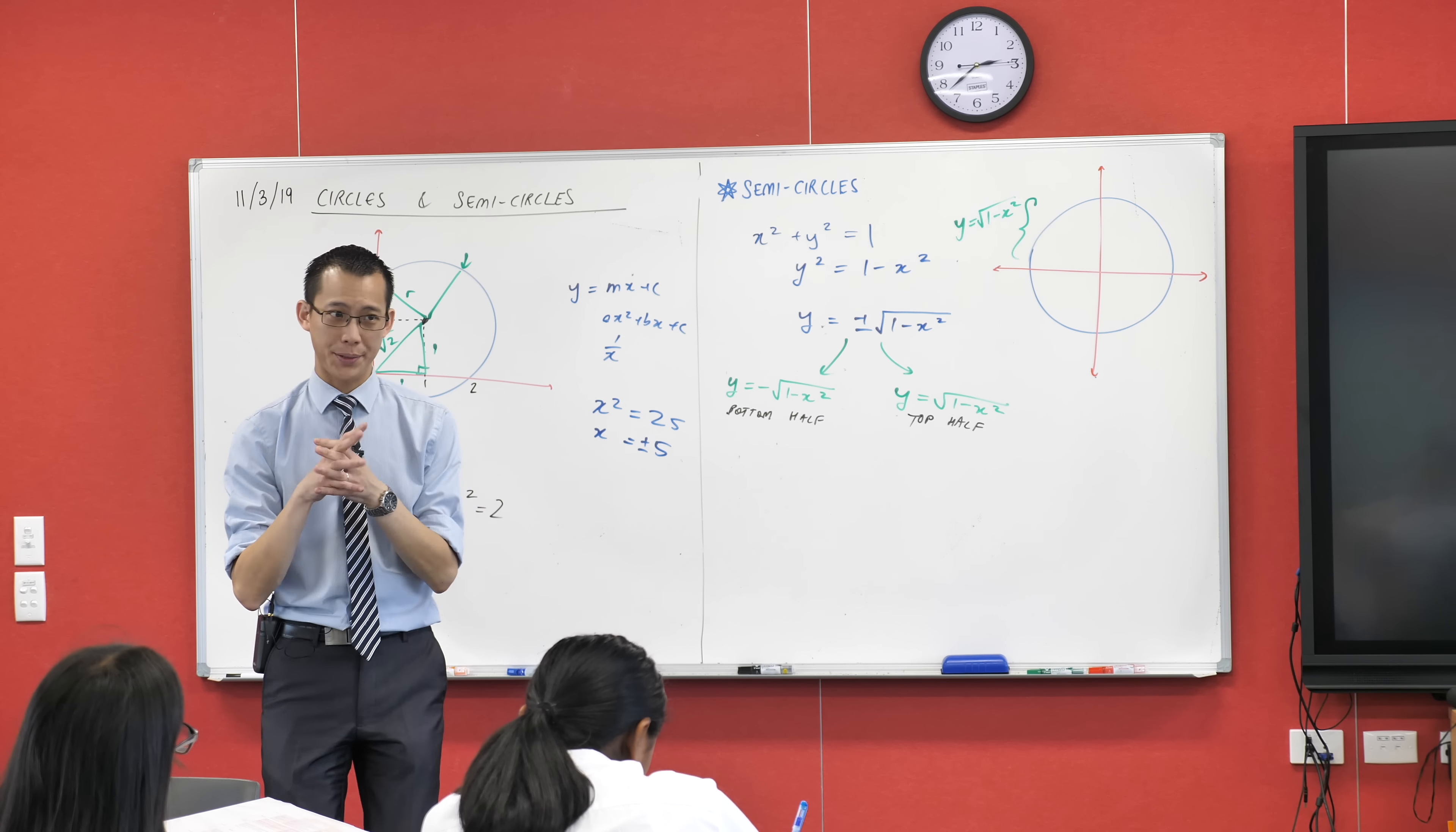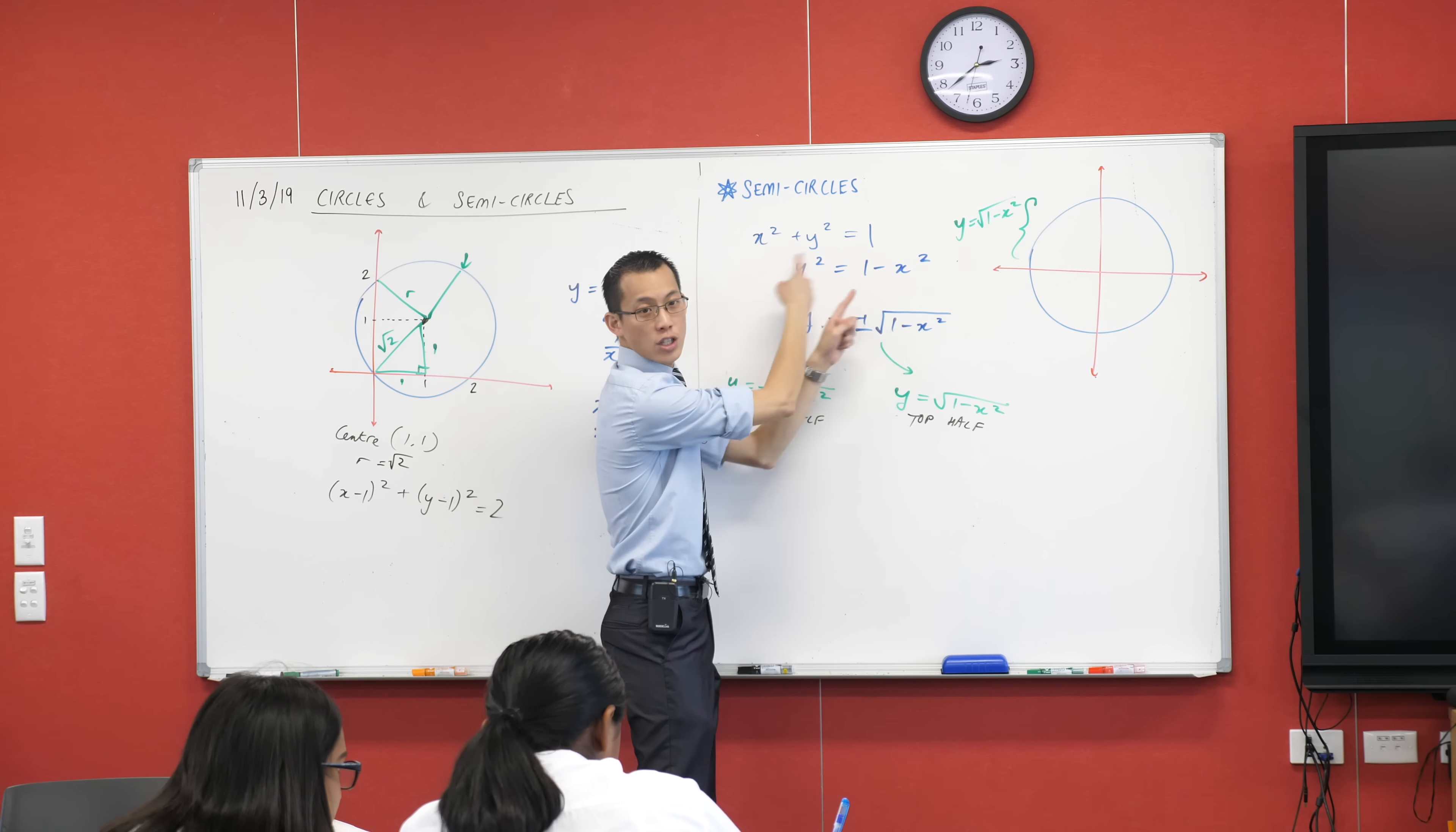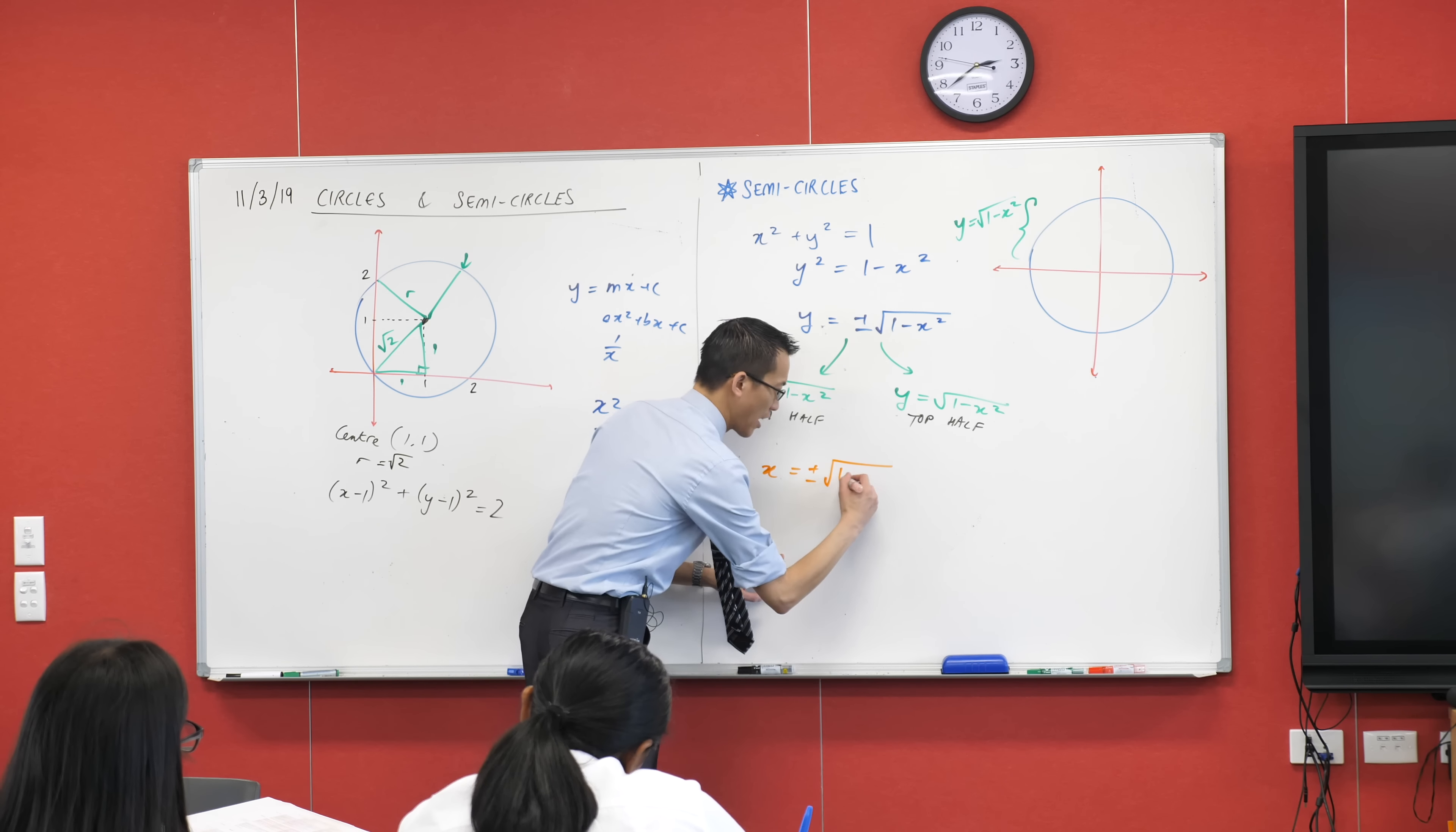How would we do left and right? We started with this guy and we made y the subject. If we went through and made x the subject instead, you're literally swapping all the x and y's around. You're going to get x equals, if I made x the subject instead of y the subject, you're still going to have a plus or minus, still going to have the square root, 1 minus y squared.